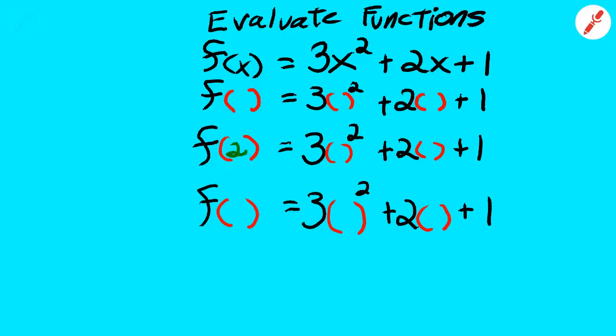So for instance, suppose we put a green 2 in one set of parentheses. Then what we do is calculate the answer, which is 17.